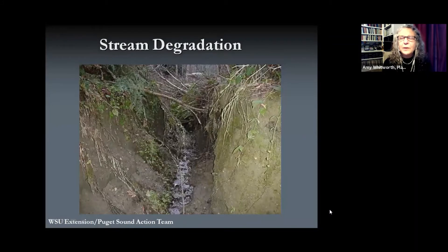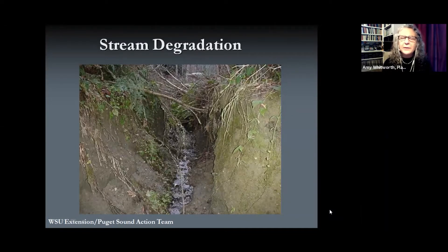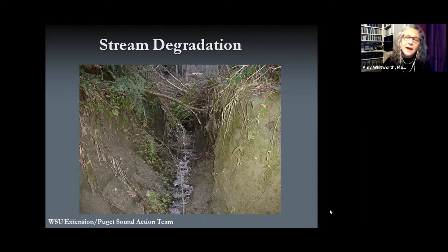Another problem from high runoff is stream degradation. Many forest creeks and small rivulets were not designed for such large volumes, so stream channels get scoured out, making very deep ravines, which leads to slope failure, soil erosion, and carrying bits of soil downstream and clogging up streams. It's not just the polluted wastewater — the volume itself is causing this stream degradation.